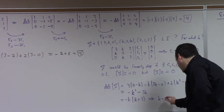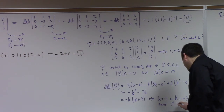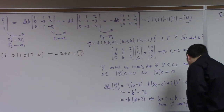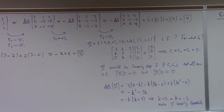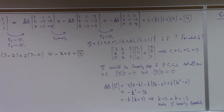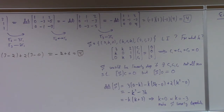So either k equals 0 or k equals minus 3 makes the set linearly dependent. If we ask what values of k make the set linearly independent, the answer is any real number except 0 or minus 3 — assuming we're working over the reals. If the problem doesn't specify the field, you may state your choice at the start. There's your brief introduction to eigenvectors — we will come back to this.